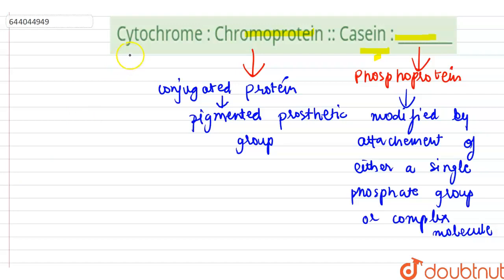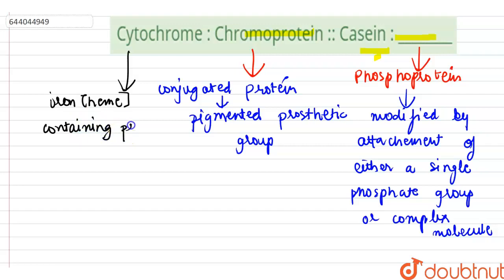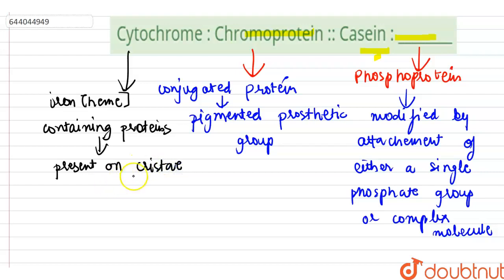Cytochromes are iron-containing proteins, or we can say heme-containing proteins. They contain a heme prosthetic group, and are basically present on the cristae — that is, the inner foldings of mitochondria.